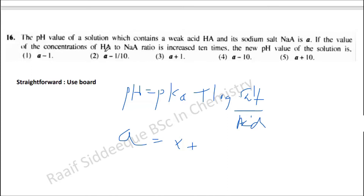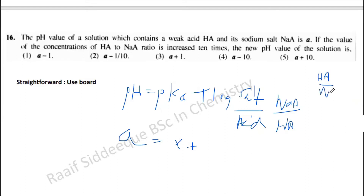Now, if the value of the concentration of HA to NaA ratio is increased 10 times, think about this — the Henderson-Hasselbalch formula uses NaA over HA. But in the question, they say they are going to increase HA over NaA — so a 10 to 1 ratio.